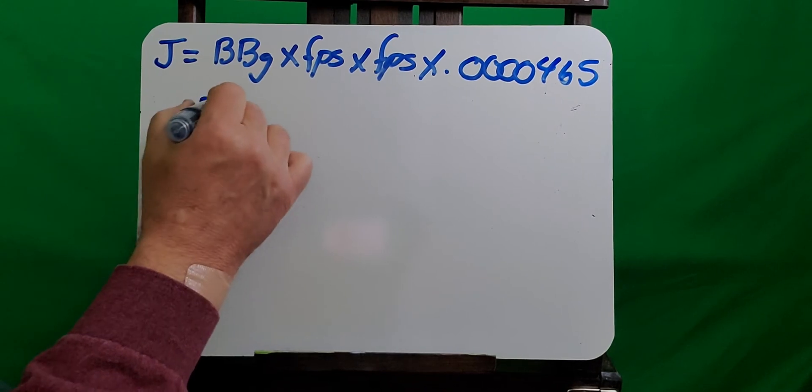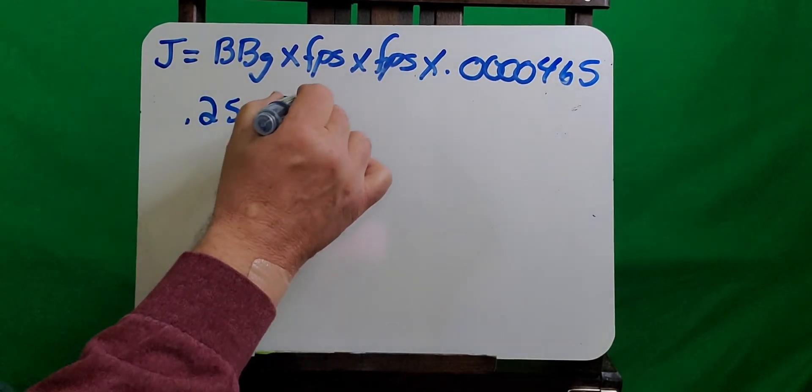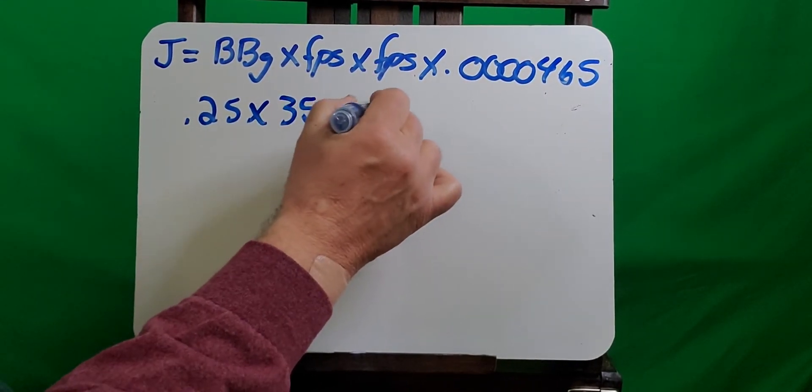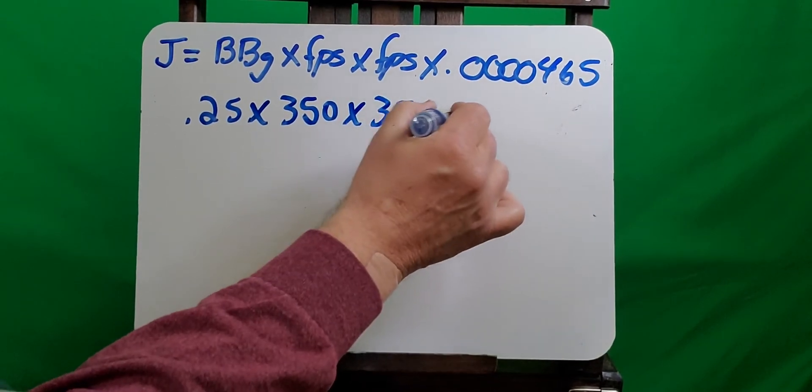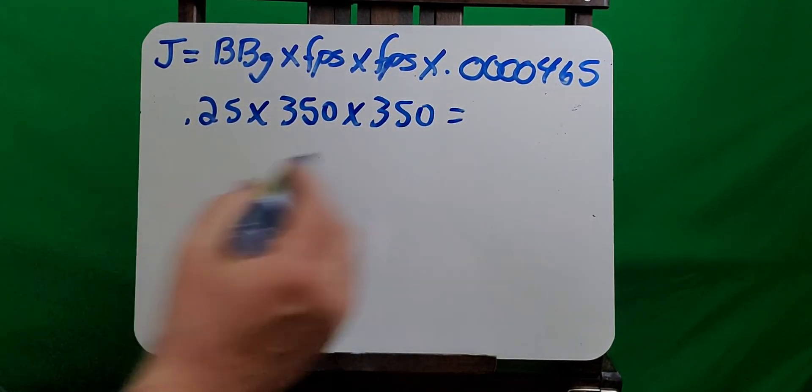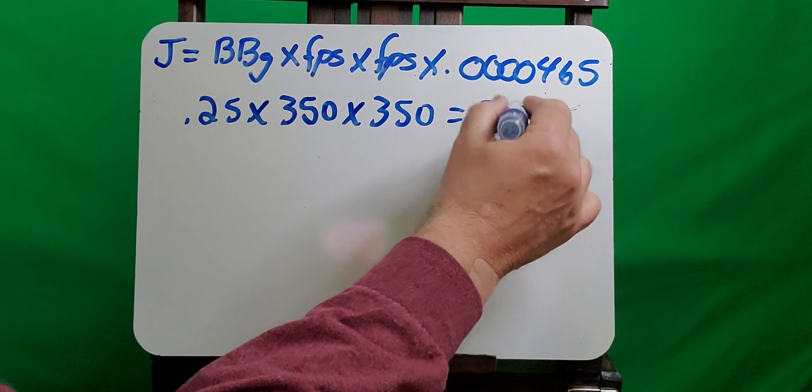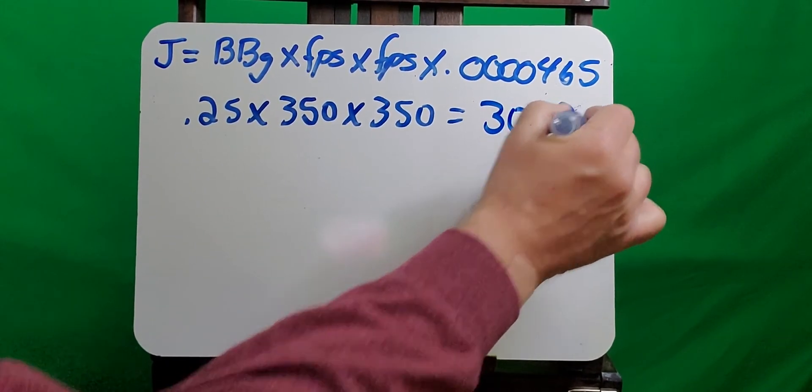Now let's use that example we used just a little while ago, where we use a 0.25 gram BB traveling at 350 feet per second. So 0.25 times 350 times 350 is equal to 30,625.